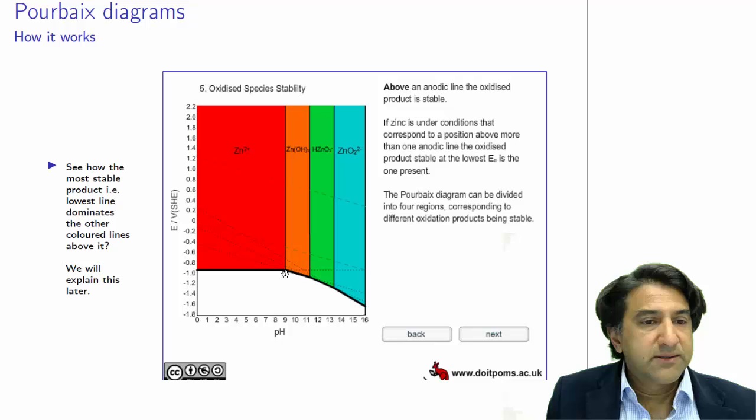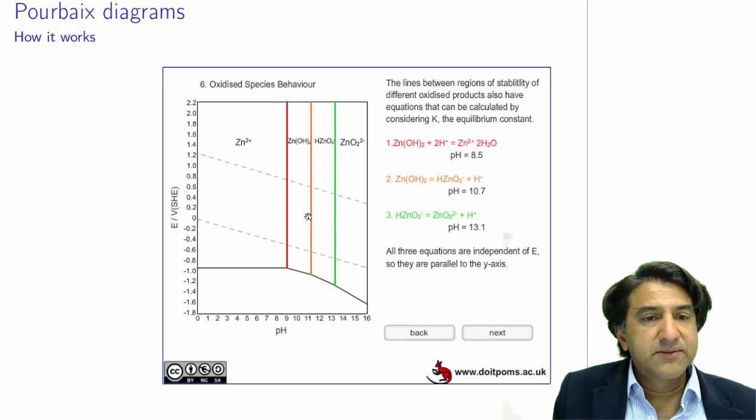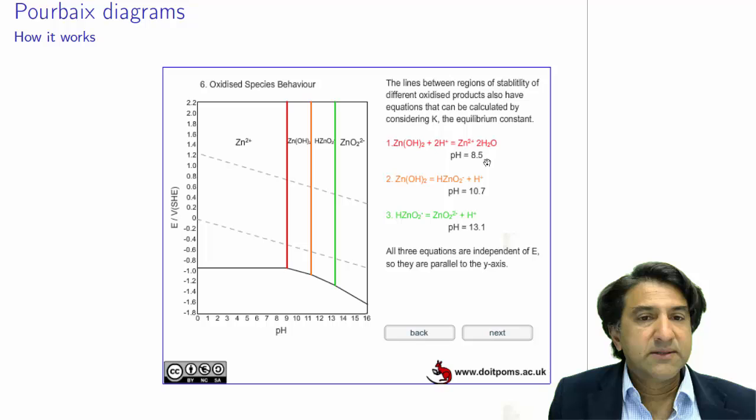Now, let's look at these vertical lines here where these equilibria occur between Zn2+, ZnOH2, and so on. We can get those from equilibrium constants. So here is, for example, the first one: Zn2+ to ZnOH2.